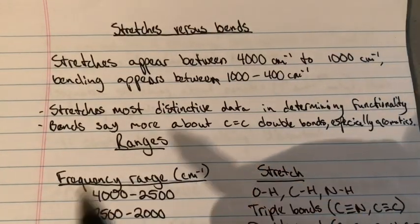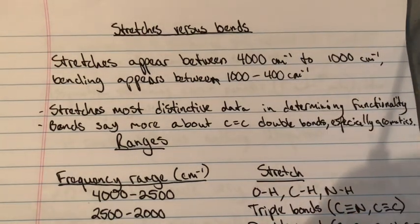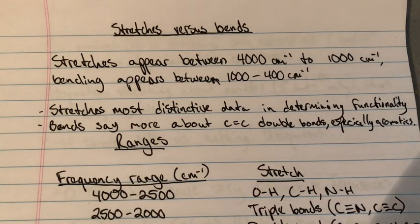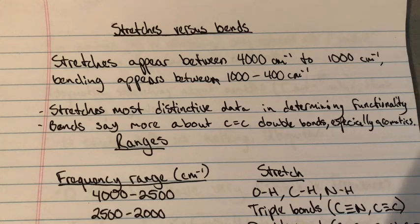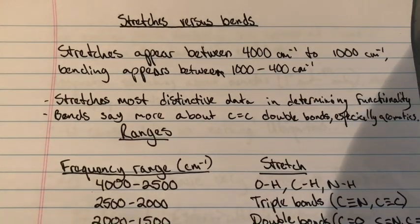Speaking of stretches versus bends: stretches appear between 4,000 and 1,000 wave numbers. Bending appears between 1,000 and 400 centimeters inverse — so most to the right is where you'll see the bending. When talking about bending, you're talking about out-of-plane or in-plane bending, really thinking about alkenes and aromatic compounds that are already planar. Stretches are the most distinctive data for determining functionality — we're really going to look at O-H stretches, triple bonds, double bonds, and the like. Bends say more about CC double bonds, especially aromatics.